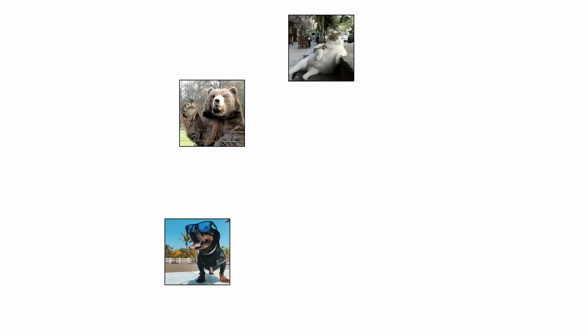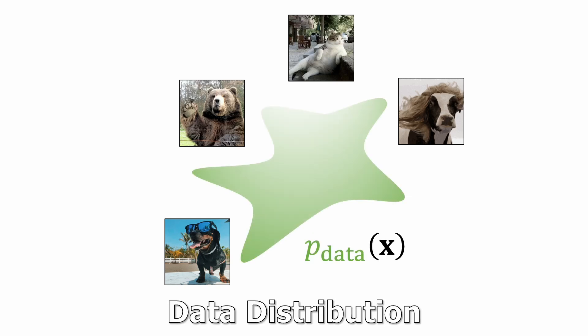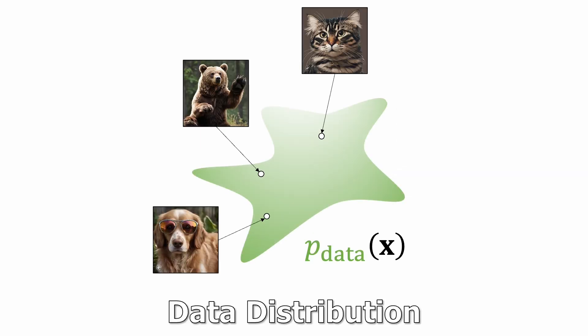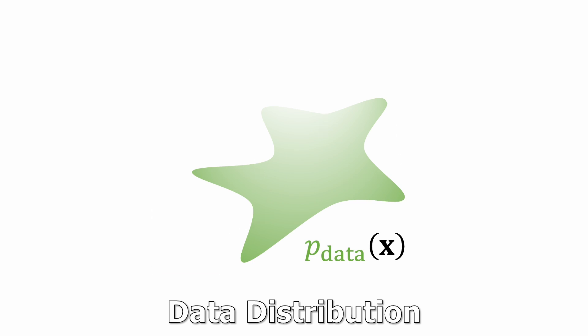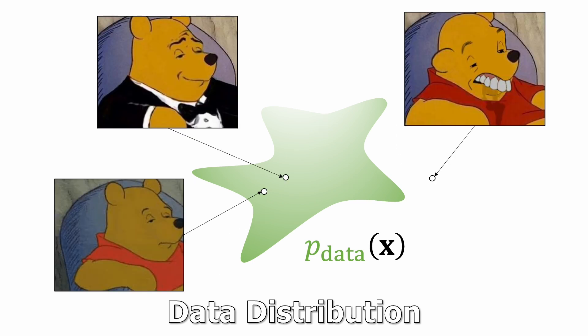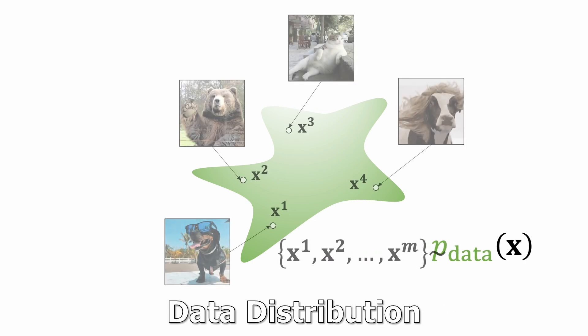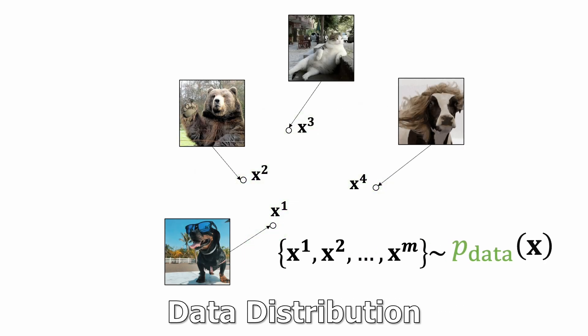Imagine we collect a dataset of images. It would be awesome if we can model the data distribution. We can create new images from this distribution, or evaluate the likelihood of a sample. But we don't know what the true data distribution is. We only have the samples.